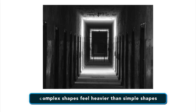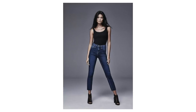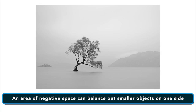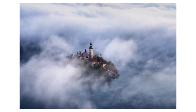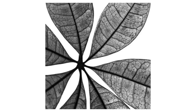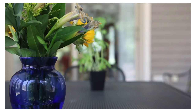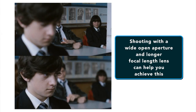Next thing to consider is shape. Complex shapes in a scene feel heavier than simple shapes. Humans are complex shapes themselves, so placing them on a simple shaped background is an easy way to make them stand out. Next, consider negative space — a large area of negative space can balance out smaller objects on one side. The negative space essentially acts like a large shape by itself. Negative space and contrast can work together to draw your eye to the focal point. Objects in focus will generally carry more visual weight than those that are out of focus. Shooting with a wide open aperture and longer focal lengths can help you balance this.